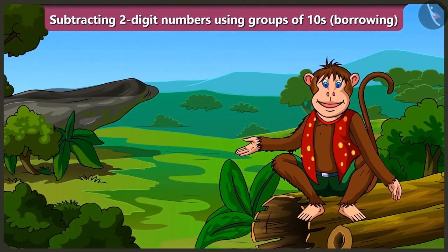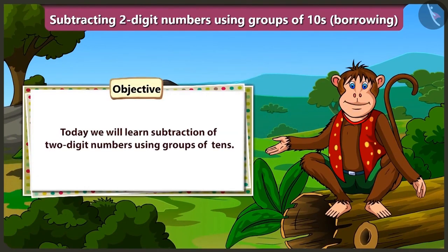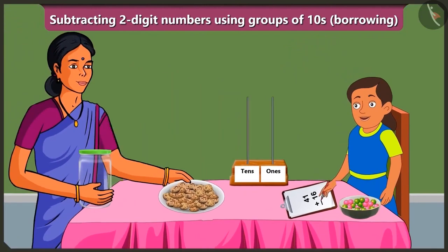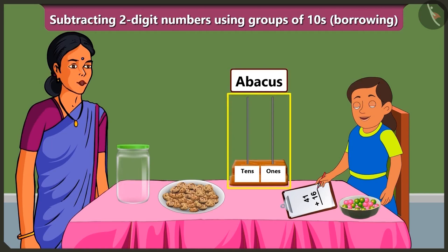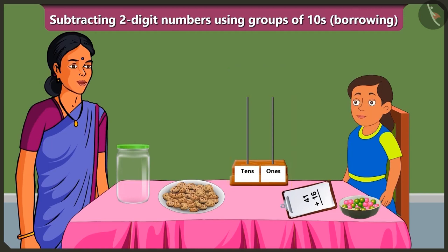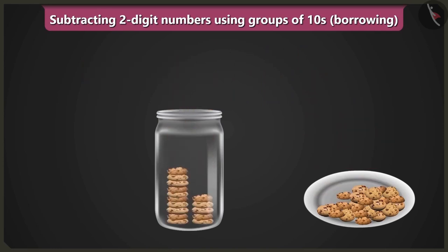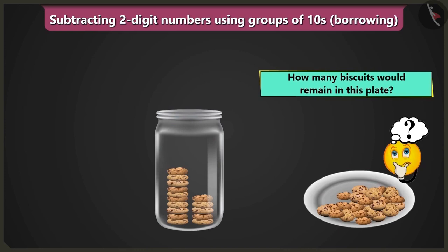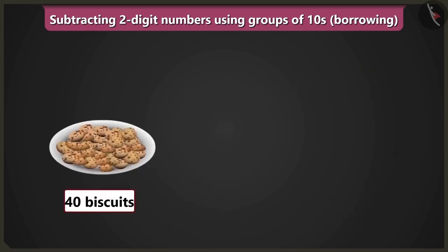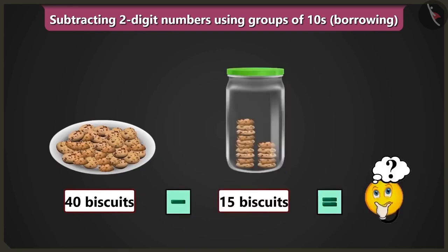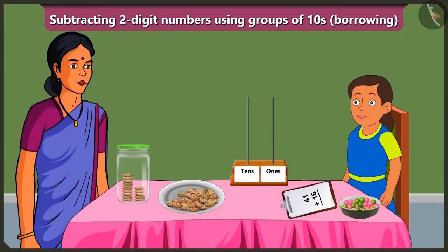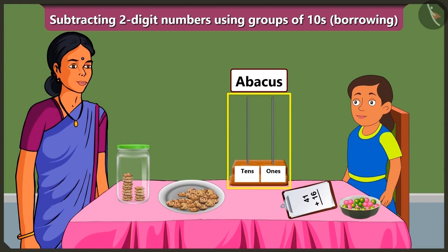Today we will learn subtraction of two-digit numbers by borrowing with the help of Bubbly's abacus. Oh wow, Bubbly, you are studying with the help of abacus! Look Bubbly, there are 40 biscuits in this plate. If I fill this jar with 15 biscuits, how many biscuits would remain? To know this, we would have to subtract 15 biscuits from 40 biscuits. Can you solve the subtraction without writing, just by borrowing with the help of this abacus? Subtracting by borrowing with the help of abacus — how can we do that? Come on, let me explain.